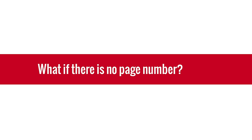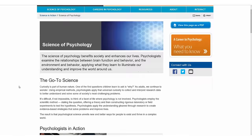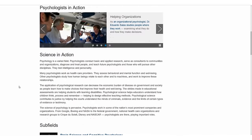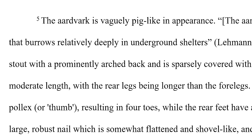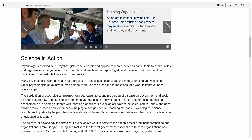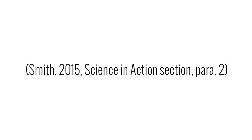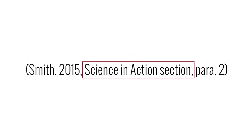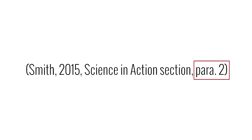What if there is no page number? This is also common with web sources. You have a couple of options if this arises. If the paragraphs are numbered, you can cite the paragraph by writing 'para.' and then the number. If the paragraphs are not numbered, then you can cite the appropriate heading and specify the paragraph under that heading.